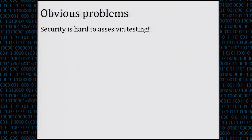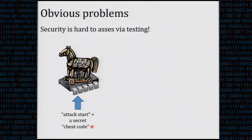The obvious problem, also mentioned in the previous talk, is that security is hard to assess via random testing. This is a general principle in cryptography: security is hard to assess by testing, which is why we need proofs. For example, there could be a specific input — a cheat code or secret password — that makes the device malfunction. The device behaves normally until it receives this cheat code, and since the password is long enough to be hard to guess, the probability of detecting it by random testing is exponentially small.